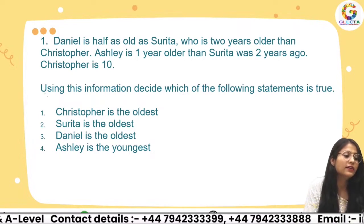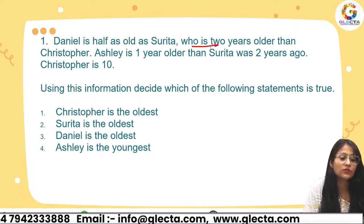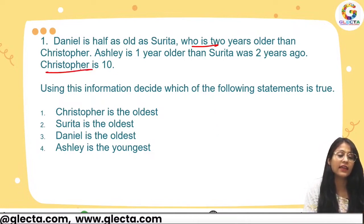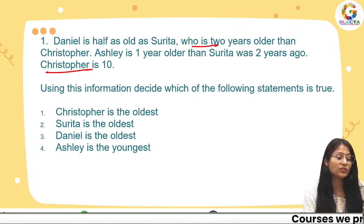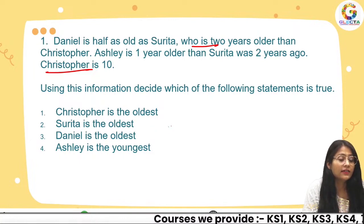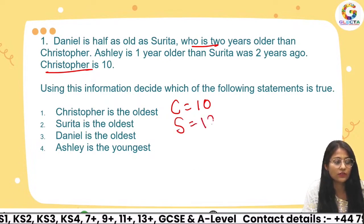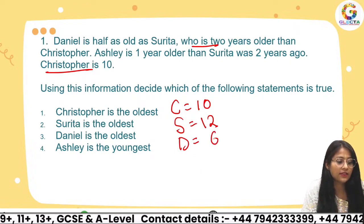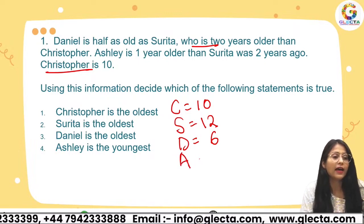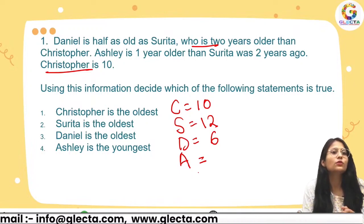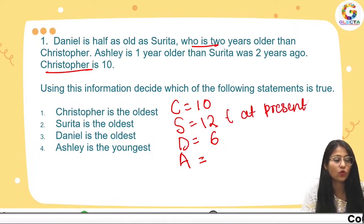Daniel is half as old as Sarita, who is two years older than Christopher. The present age of Christopher is 12. If Christopher is 10 years old, Sarita would be 12, and Daniel would be 6, since Daniel is half of Sarita's age. Ashley's age is one year older than Sarita's present age.